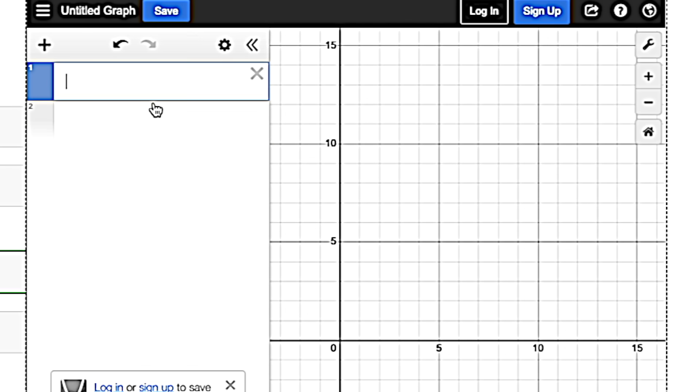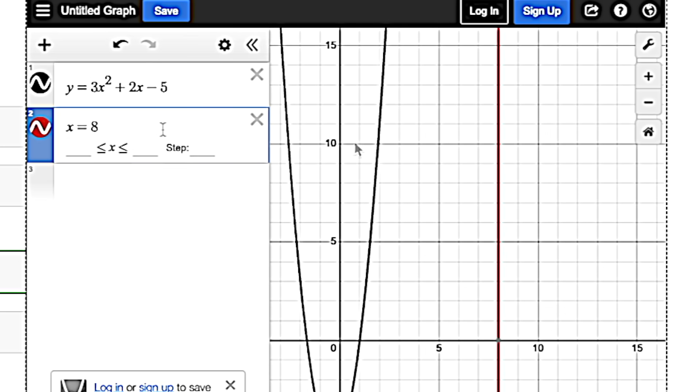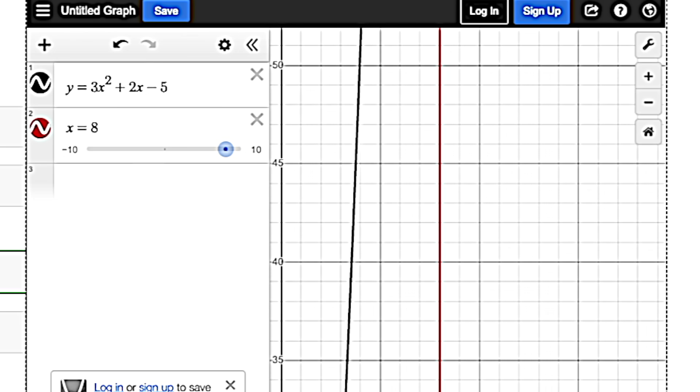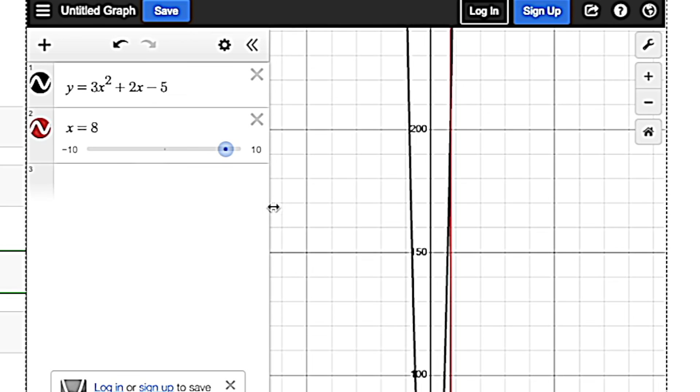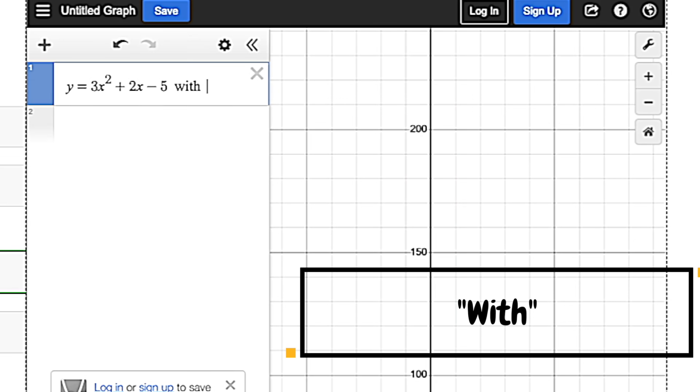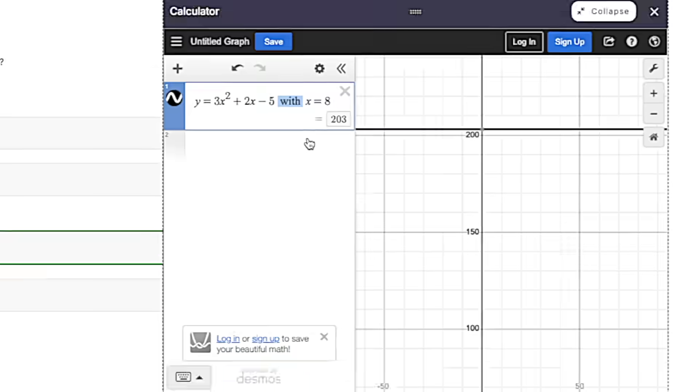Another cool feature is if you're just plugging in a value for X. Let's say we had Y equals three X squared plus two X minus five. And it gives us an input for X. We could say X equals eight and then try to figure out where they intersect. You can see you're going to have to do some zooming. It's going to be a bit annoying. Or you could just say with X equals eight. And it'll actually give you the value right there on the same line. So the word with is really powerful if you're just plugging something in for X.